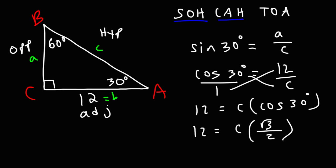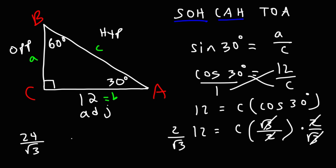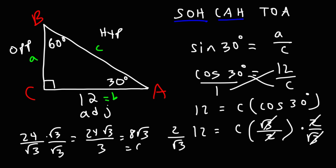You can look this up or use a reference triangle — I have other videos on that. Multiplying both sides by 2 over the square root of 3, the 2's and the square root of 3's cancel on the right side, leaving C = 24 over the square root of 3. Rationalizing, the square root of 3 times the square root of 3 is 3, and 24 divided by 3 is 8, so C = 8√3.